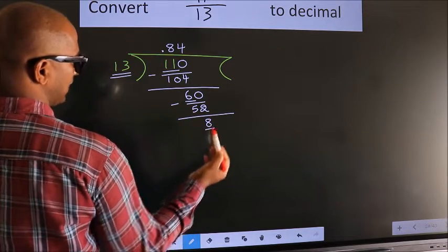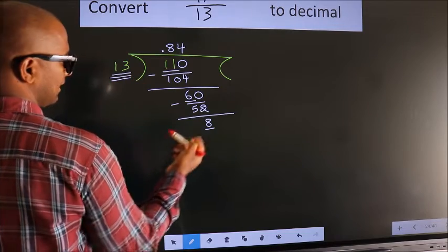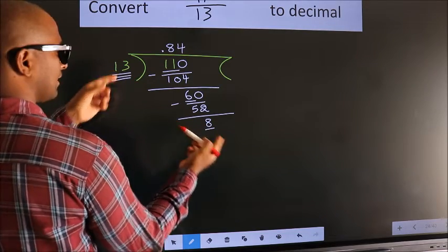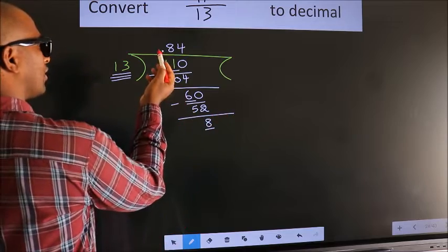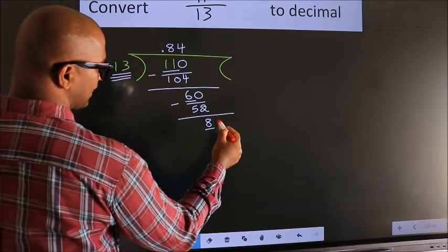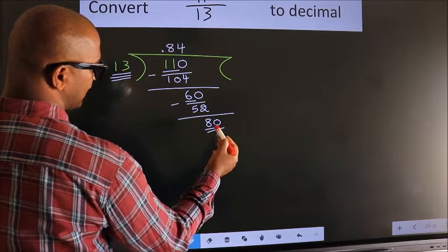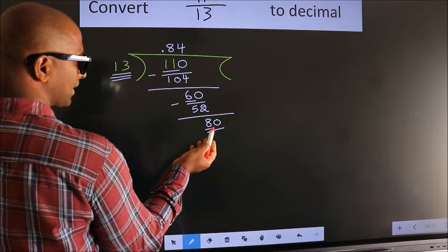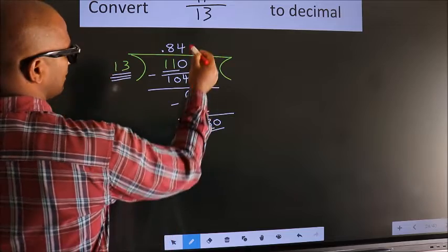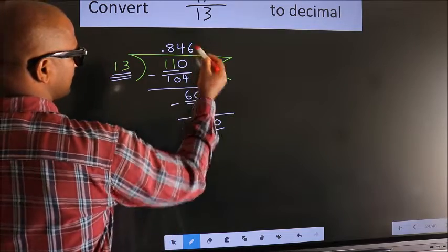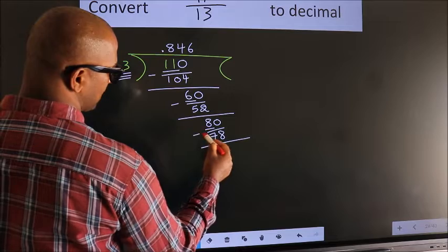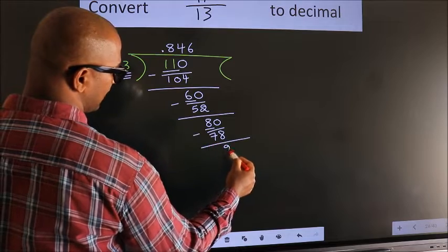Here we have 8 and here 13. 8 is smaller than 13, and we already have the decimal, so we can directly take 0 — so 80. A number close to 80 in the 13 table is 13 sixes, 78. Now we subtract and we get 2.